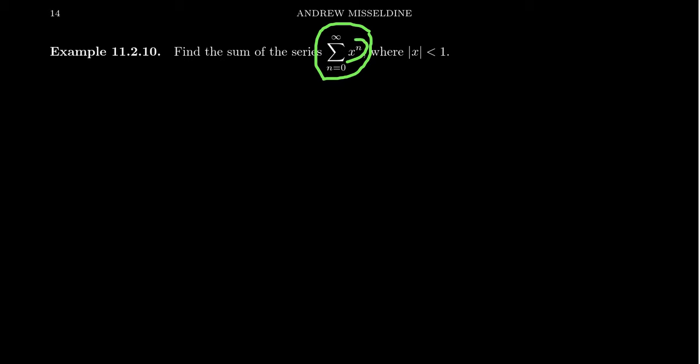But then what's also different about this one compared to previous examples is that there'll be a variable inside of it. We're taking x to the n. What does this add up to be?